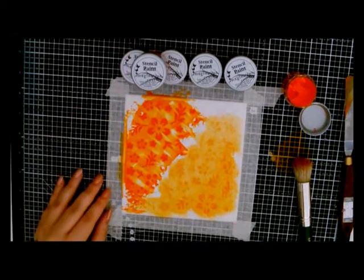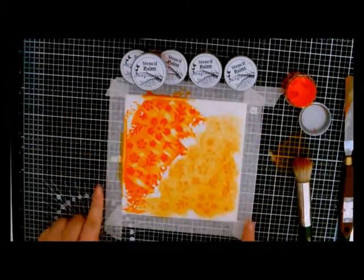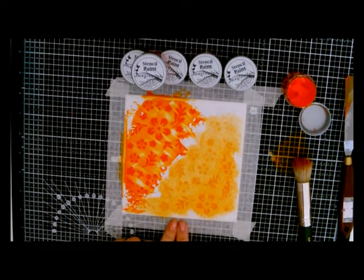As you can see, I've already got started. I have taped down with pressure tape the Imagination Crafts floral stencil onto a piece of white 6x6 card. And I've started to apply the paint in two different ways.